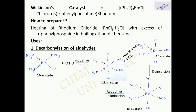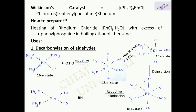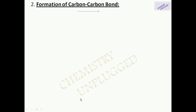Then it undergoes reductive elimination, which is the opposite of oxidative addition — one or more parts of the reactant are removed from the complex. The complex is left in the form Rh(PPh₃)₂(Cl)(CO), because this complex has a strong affinity for carbon monoxide. It captures the CO, and the alkane R–H is released. This process causes conversion of aldehyde into alkane.